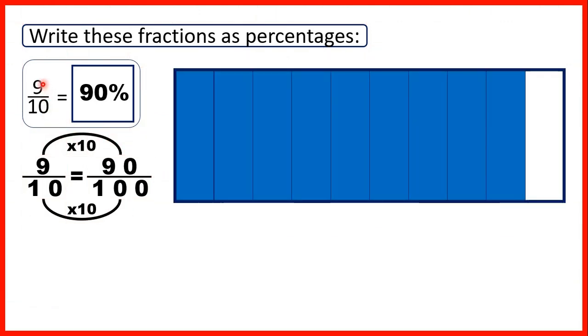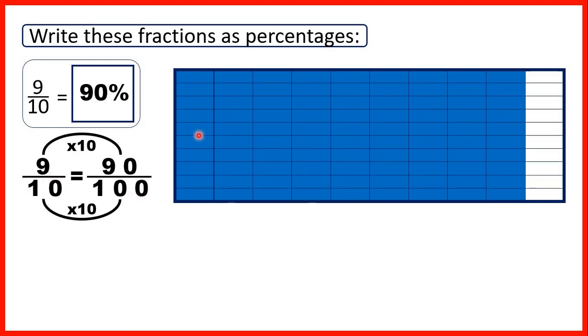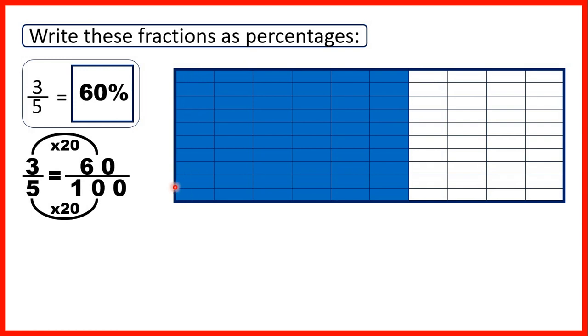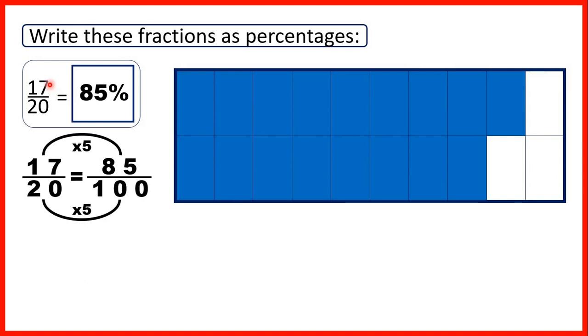If we look at what we did here: first we had 9 tenths, so 9 parts out of 10 on our fraction bar. But a percentage is a fraction over 100, and we found that 9 tenths was equivalent to 90 hundredths, so that's 90 percent. Then we had three fifths. We found that was equivalent to 60 hundredths, so 60 percent.